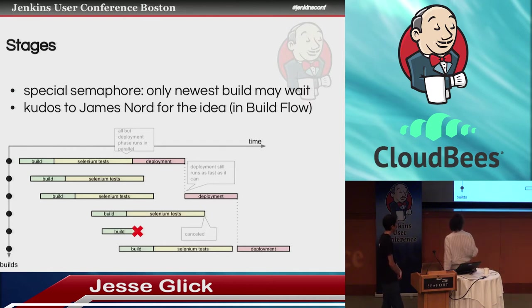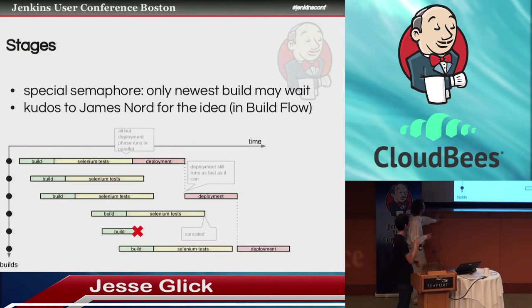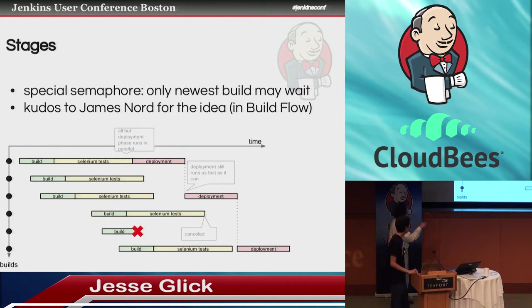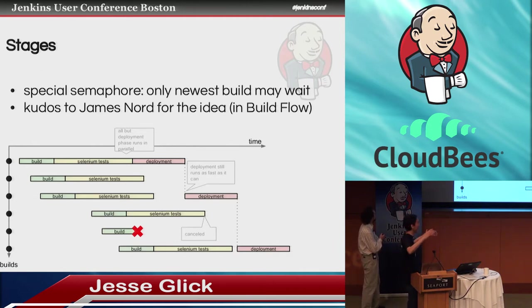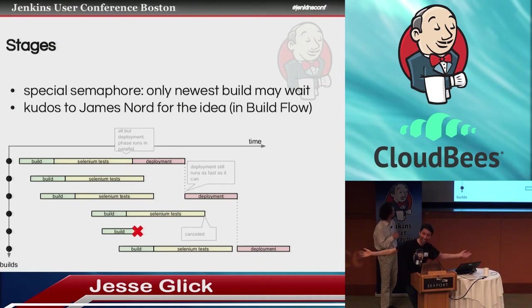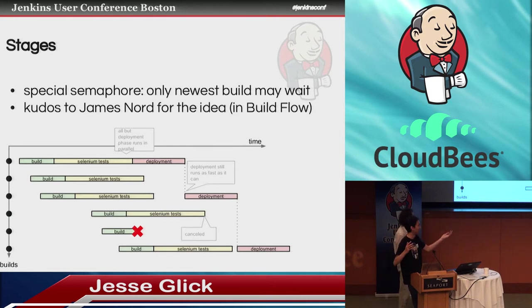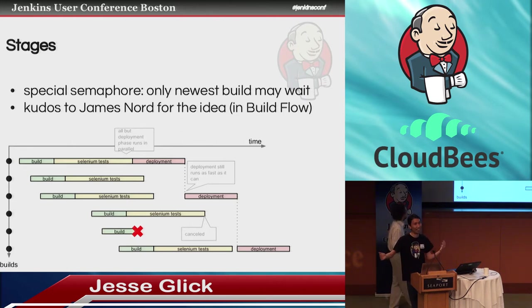Stages are important in continuous deployment scenarios. Picture a three-stage pipeline: build, test, then deployment. In the presence of many builds running in parallel, this creates an interesting problem. Each build can run on its own computer with its own copy of source control — that's fine. You can also run UI-driven tests in parallel for different builds, each with its own browser and test server.